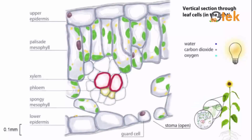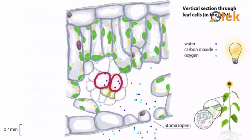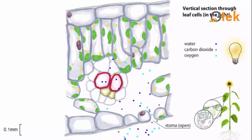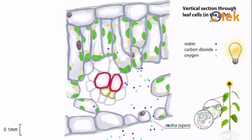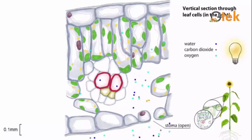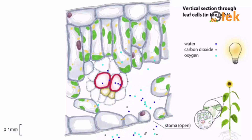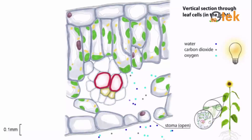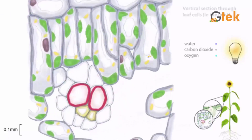Now let us see about the vertical section through the leaf cell in light. You can see the parts of the vertical section here: the phloem, the stoma which will be opened up, and water, carbon dioxide, and oxygen travel through the vertical section in the leaf cell. The width of the stoma is 0.1 mm. You can see how water, carbon dioxide, and oxygen travel along the leaf cell in the vertical section.